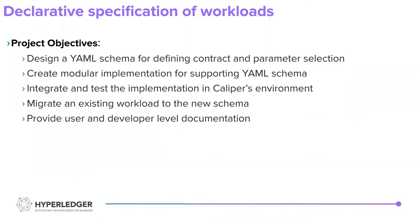Coming to project objectives: the first was to build the YAML schema that has to be implemented, just to give an idea of how things would flow inside the project. Based on that, a modular implementation for how parameters would be handled was created. The third objective was integrating and testing how the values defined using the YAML schema and implemented using the modular classes would work in Caliper's environment. The fourth objective is migrating existing workloads — tests that are proven to work within Caliper's environment — to this new schema. The fifth is to provide user and developer documentation for people who intend to use Caliper's declarative schema.